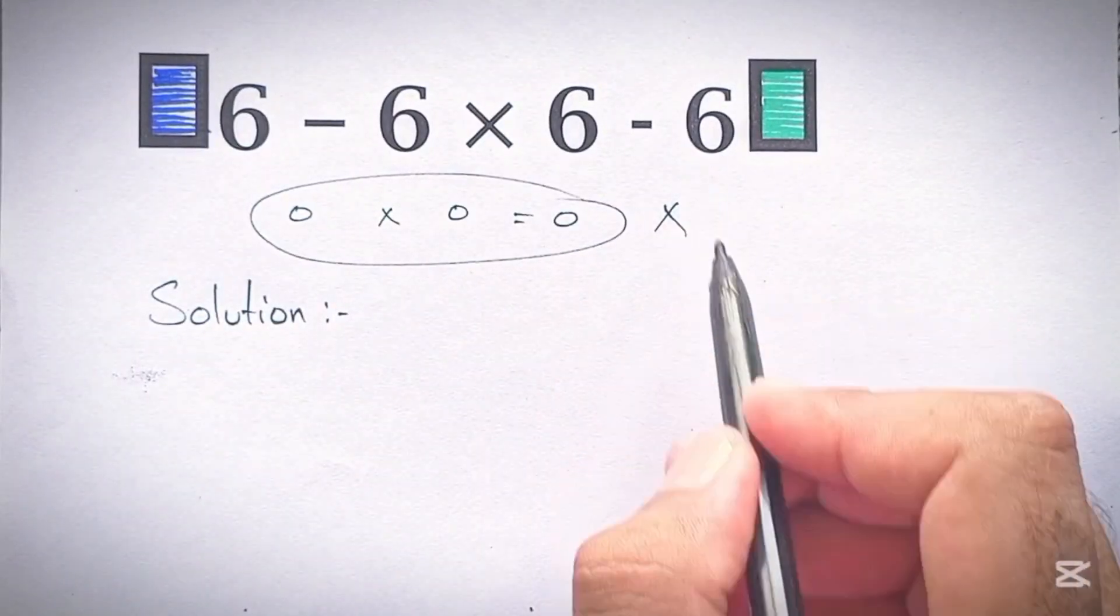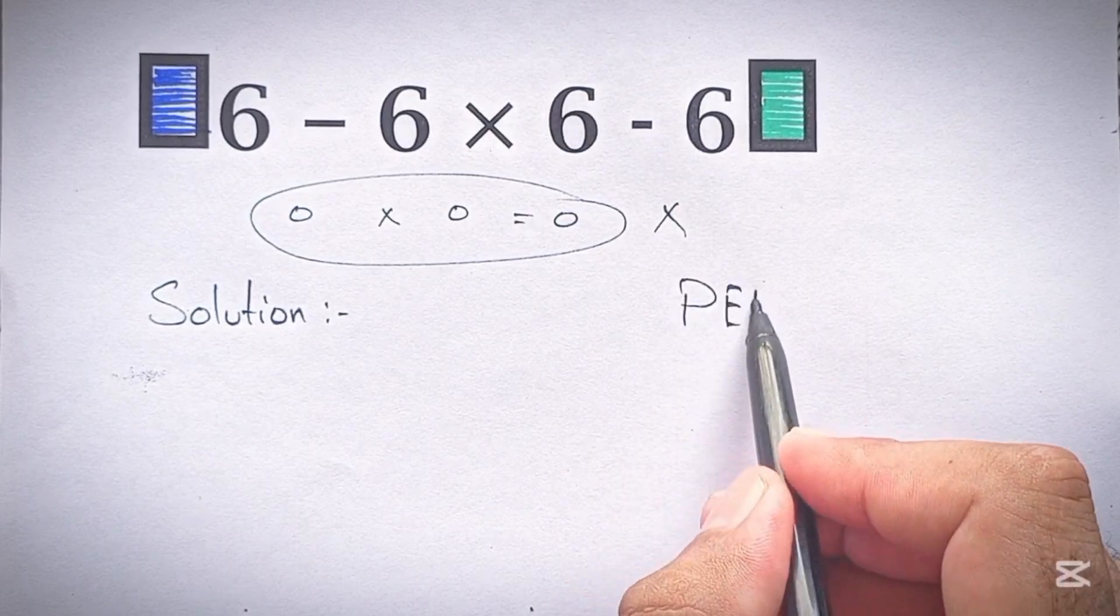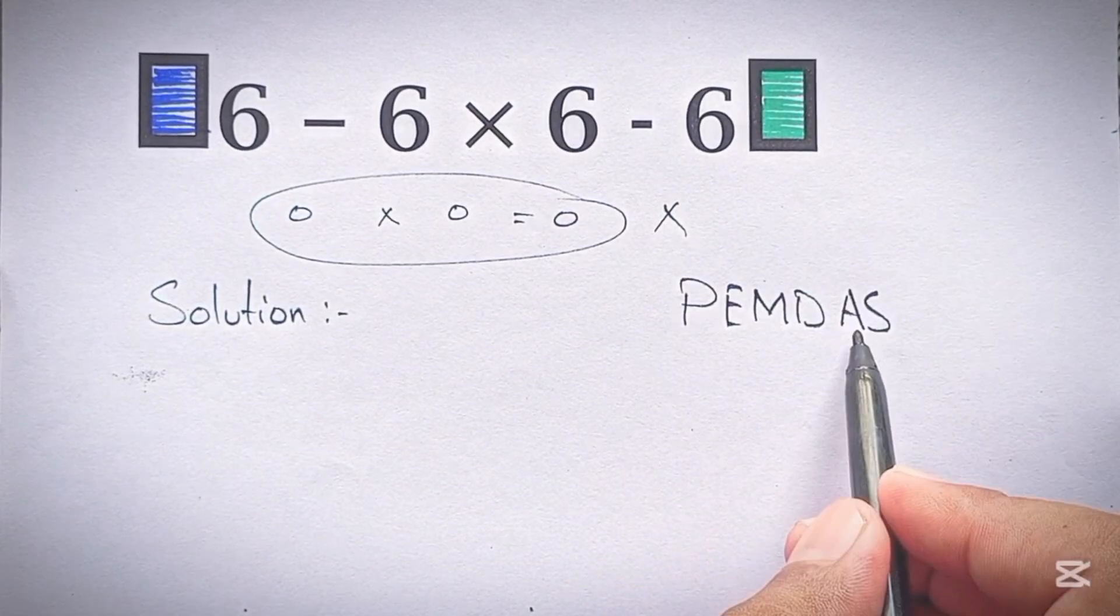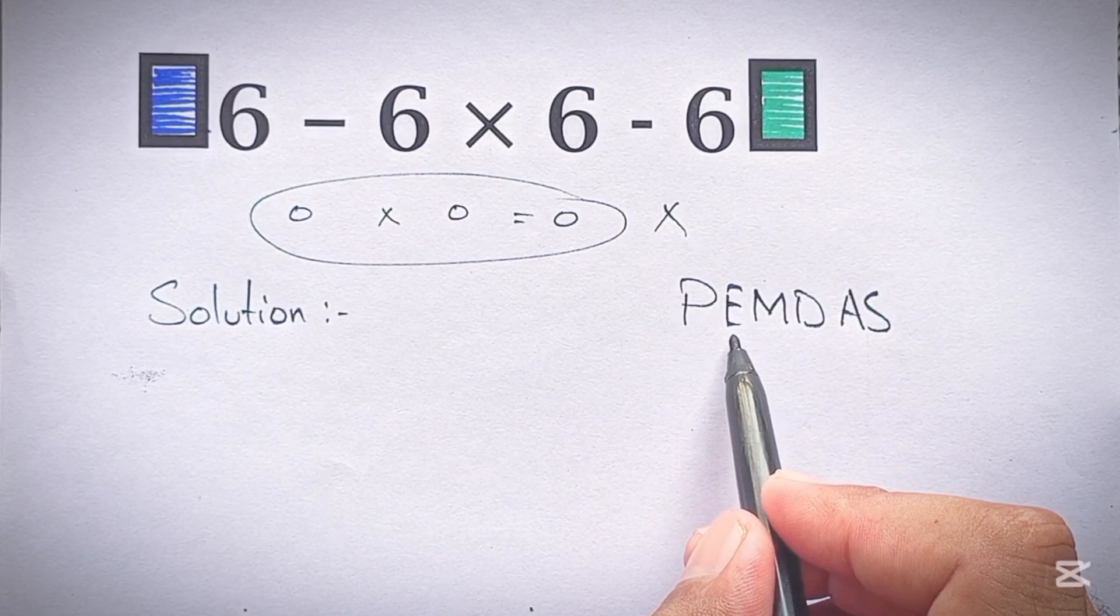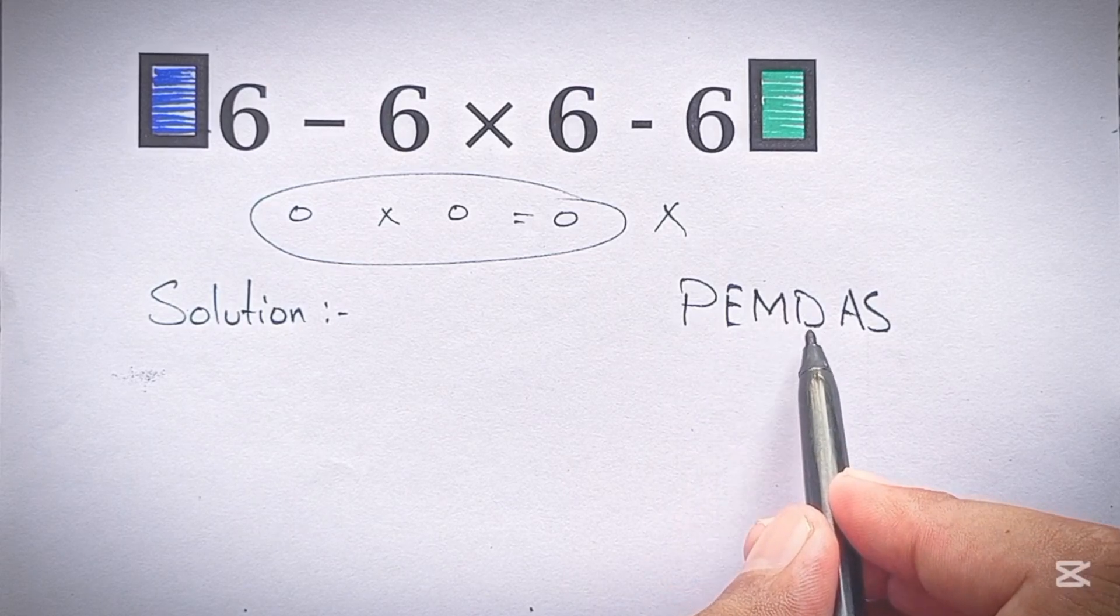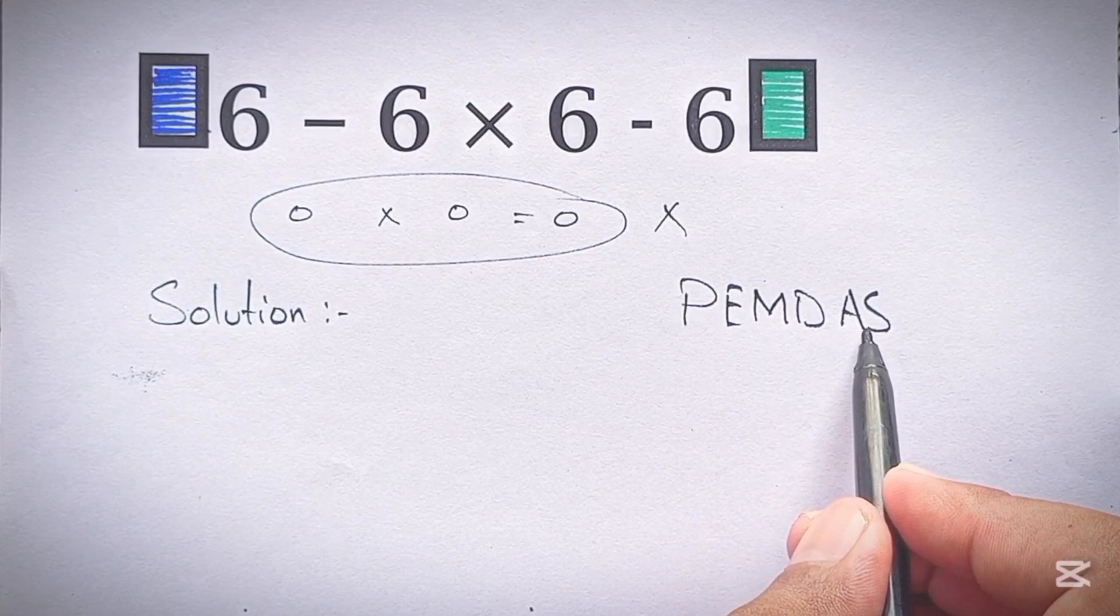Because according to the order of operations, which is PEMDAS, we first do parentheses, then exponents, then multiplication and division, and finally addition and subtraction.